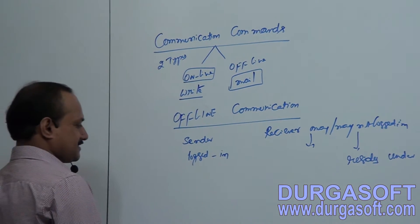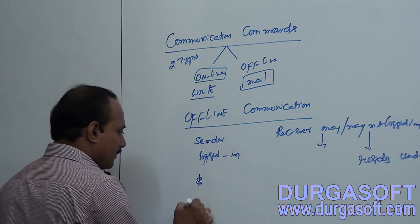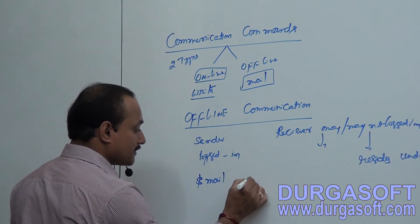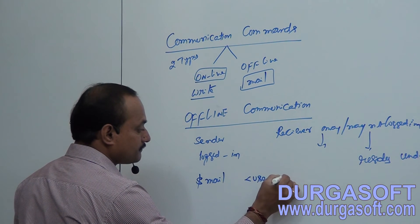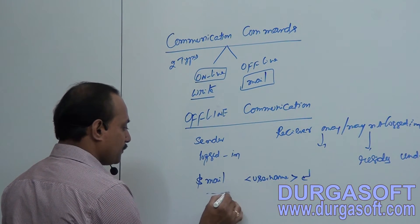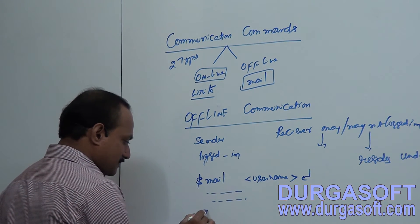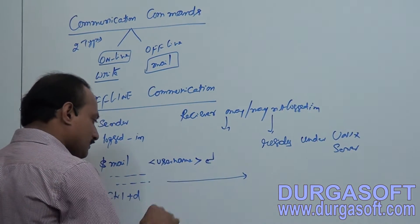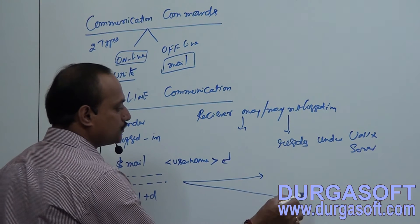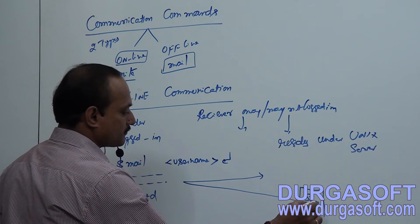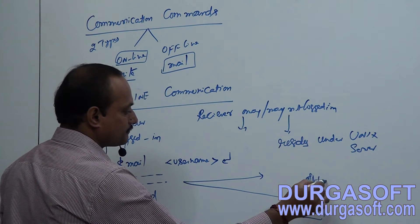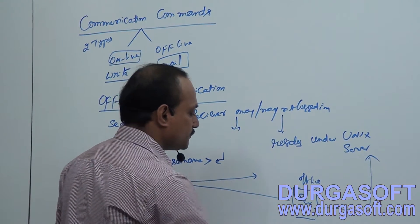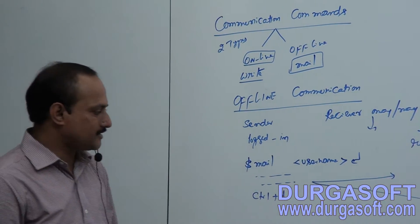How do I send offline messages or files? The offline communication is performed using the mail command: type 'mail' followed by the username. If the receiver is in login position, the message is sent directly to them. If not logged in, the message is sent to the server and stored there. Once the person comes online and logs in, the message is sent to that person. This is the mail command.